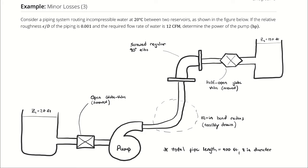Take a minute to appreciate this excellent drawing. We have a piping system that is 400 feet of pipe length. Each of those pipes is 2 inches in diameter. I have a couple of fittings which are interacting with my flow. I can account for the minor losses associated with those fittings by looking at the minor loss coefficients corresponding to an open globe valve and a screwed regular 90 degree elbow.